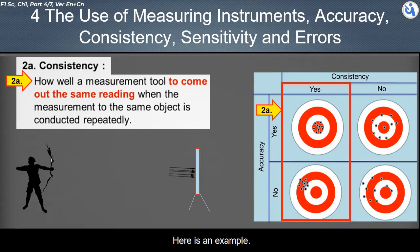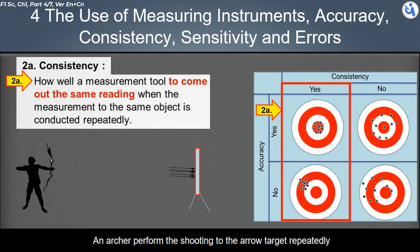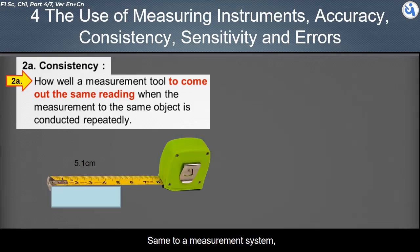Here is an example. An archer perform the shooting to the arrow target repeatedly. If the arrows can shot to about the same location on the target, we say the archer is high consistency, same to a measurement system.